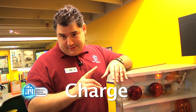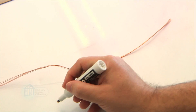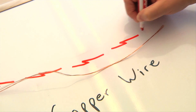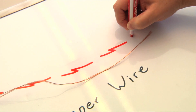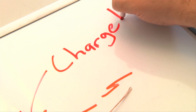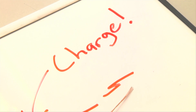Well, that's actually kind of complicated. In order to understand it, we first have to talk about charge. Most metals, like copper wire, are conductors, meaning electricity can move through them. They do this because they can carry charge — particles that have electrical energy.